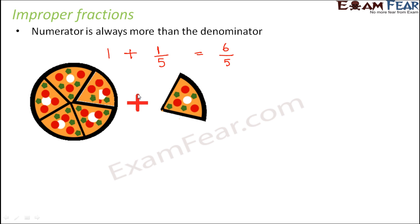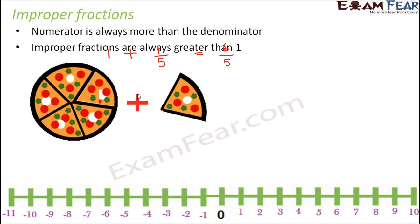Now let us look at improper fractions also on the number line. So think of any improper fractions. For example, six by five is one example of improper fractions. If I want to locate it on the number line,